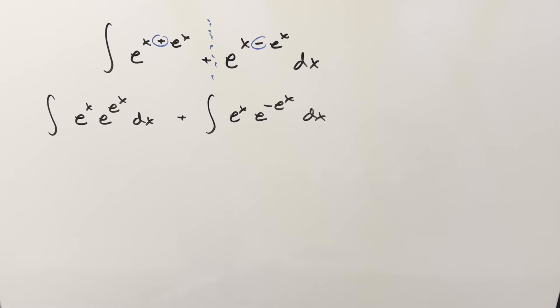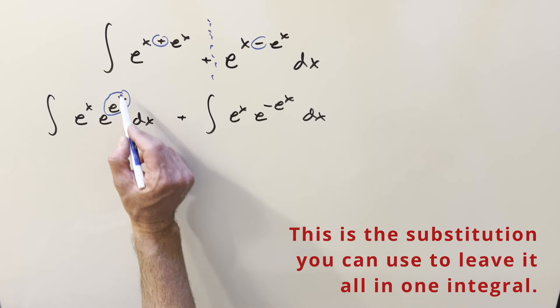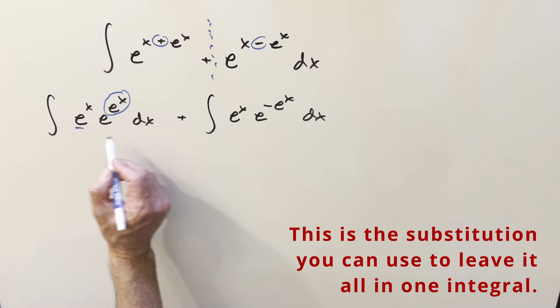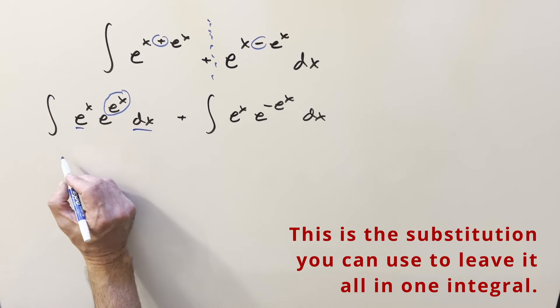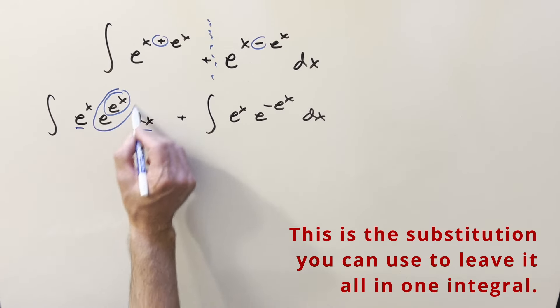And then next, all I want to do on this is u substitution. You can kind of see, so I think there's two ways to do it. You could substitute, dealing with this left one, if you substitute for e to the x, we have the derivative right here, e to the x dx. But we actually can save a step, I think, if I just substitute for the whole thing.